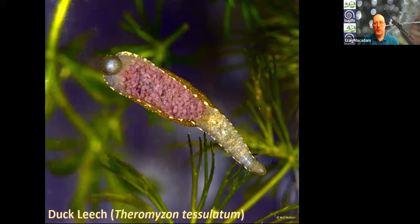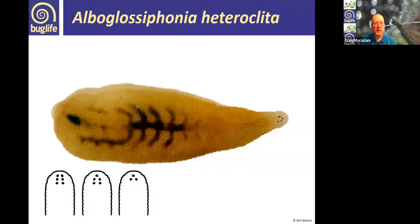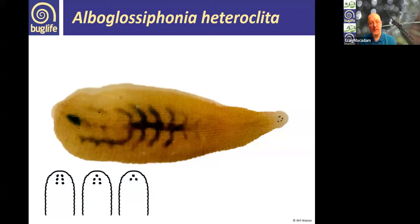The first species is Alboglossophonia heterocleta — a pale-coloured species where you can see the gut clearly as well as muscular lines within the body. It typically has six eyes but often has mutations in those eyes and combinations; you can see on one specimen that some of the eyes have fused together, making it look like it has five.